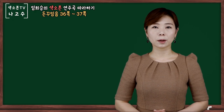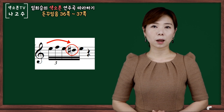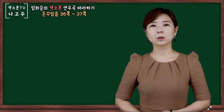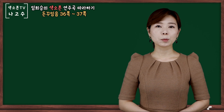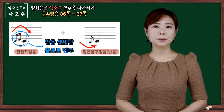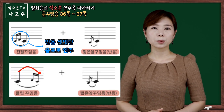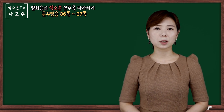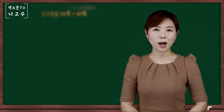가요에 사용되는 돈 꾸밈음의 형태는 원음에서 2도로 올라갔다가 다시 원음 그리고 반음 아래로 내려갔다가 다시 원음으로 돌아오는 형태를 주로 사용하고 있습니다. 교재에서는 주로 사용되는 돈 꾸밈음의 형태를 연습하는데, 돈 꾸밈음 1번은 프랄트릴러 플러스 반음 짧은 앞 꾸밈음의 혼합 형태이고, 돈 꾸밈음 2번은 플립 꾸밈음 플러스 반음 짧은 앞 꾸밈음의 혼합 형태로 되어 있습니다.